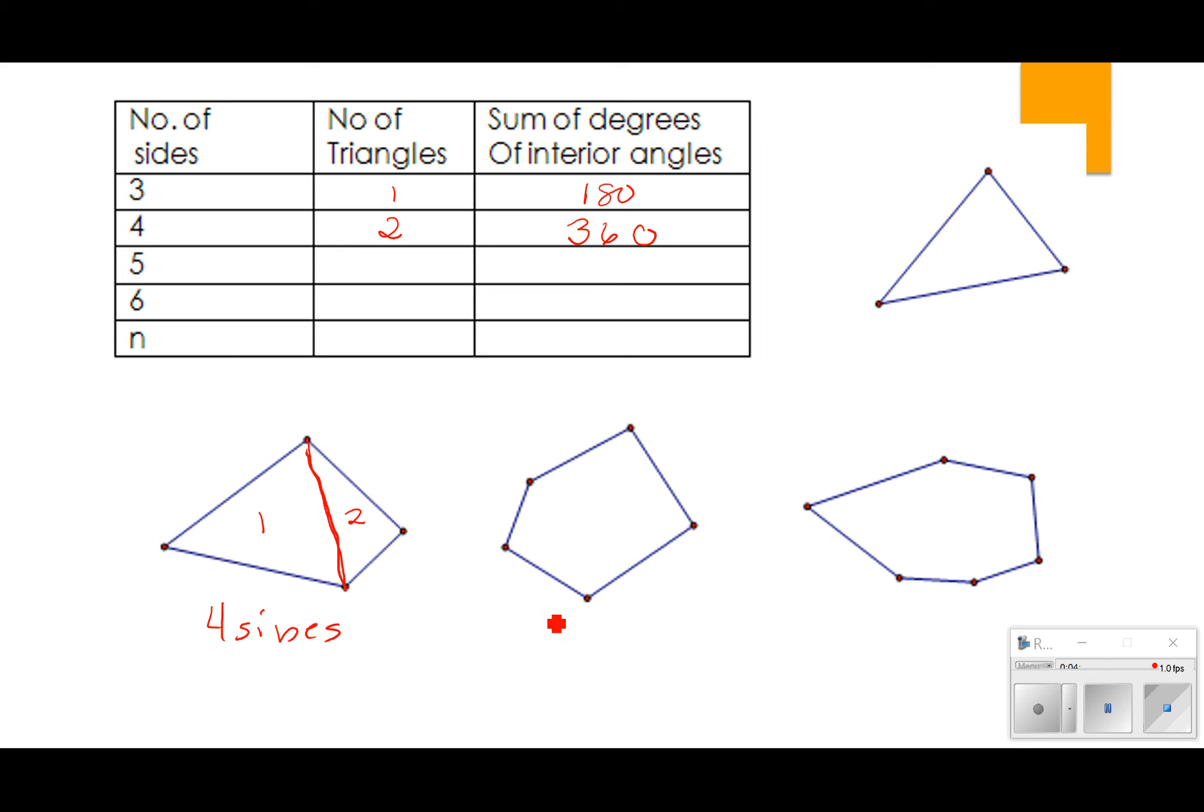If I've got five sides, from one of my diagonals I can draw two different diagonals, and that gives me three triangles. And so I've got three triangles, so that should add up to 540 degrees.